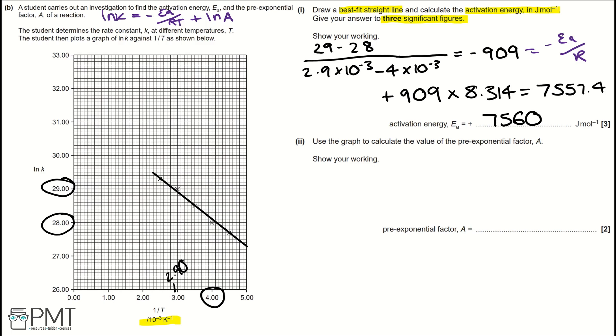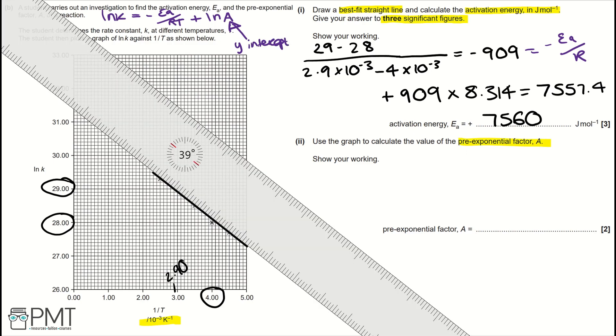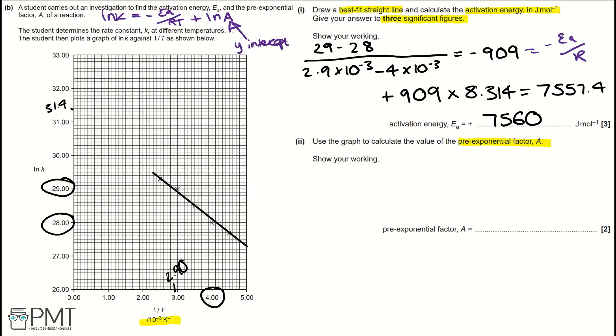Part 2: Use the graph to calculate the value of the pre-exponential factor A. Show your working. So, also using this rearranged Arrhenius equation, ln A is equal to the y-intercept. In order to find A, or the pre-exponential factor, we need to find the y-intercept first. Extrapolating the y-intercept by continuing this line, we end up here. And this is 31.4 on the graph. So ln A is equal to 31.4, meaning that A is equal to e to the 31.4, which gives us the pre-exponential value of 4.33 times 10 to the 13.